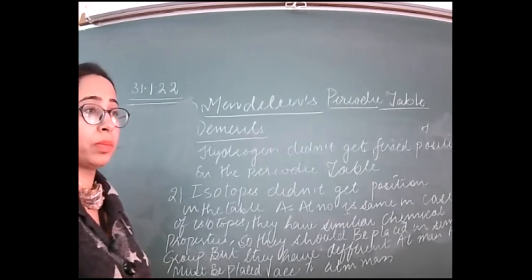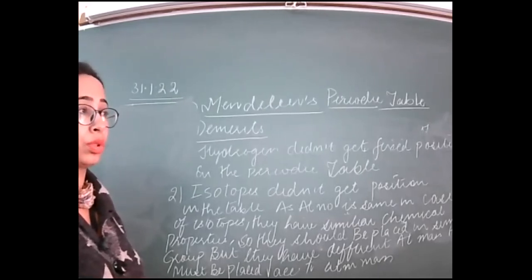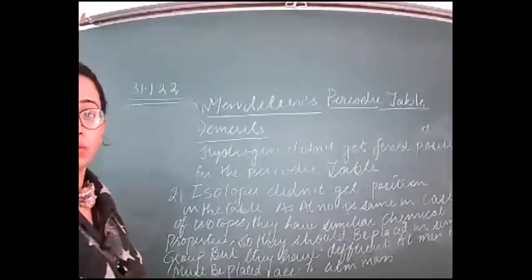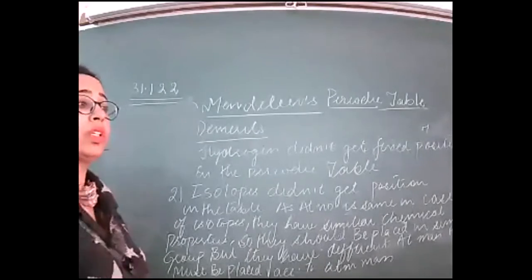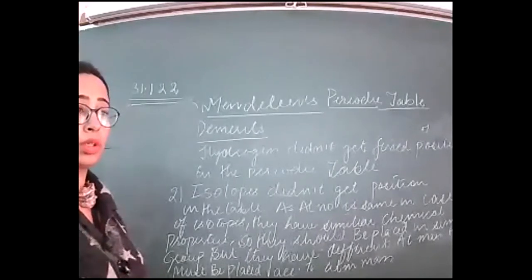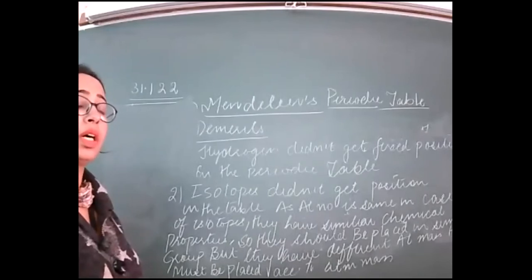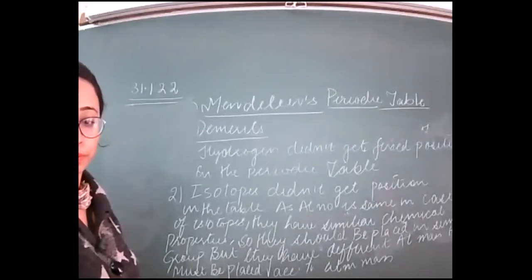More elements are being discovered and more isotopes are being found with different atomic masses. It is more convenient to place them according to atomic number. In the modern periodic table, the most abundant isotope is placed, and the atomic number serves as the basis for arrangement.